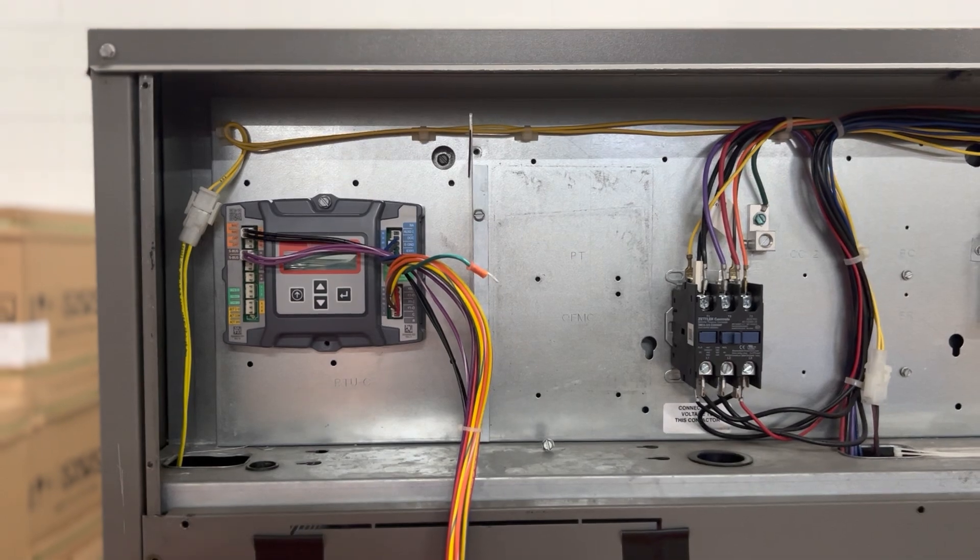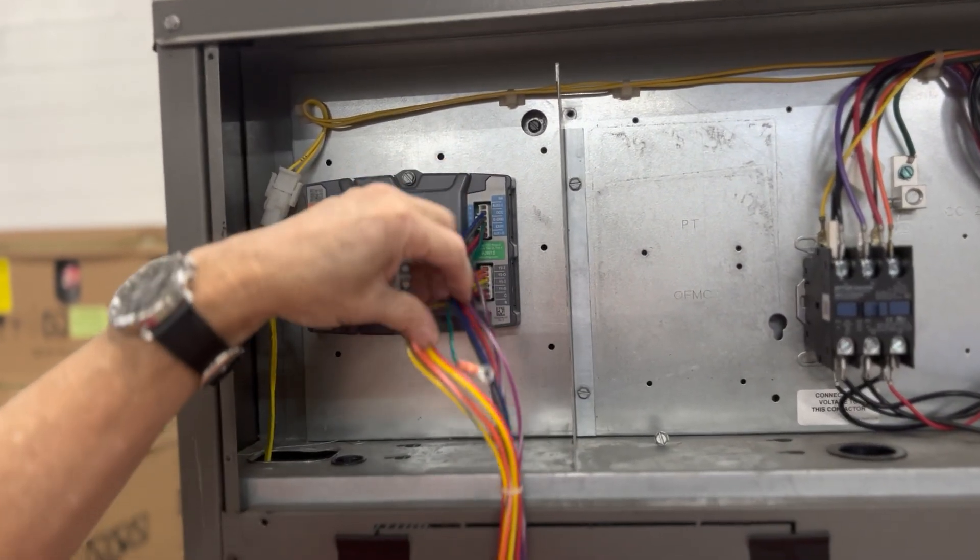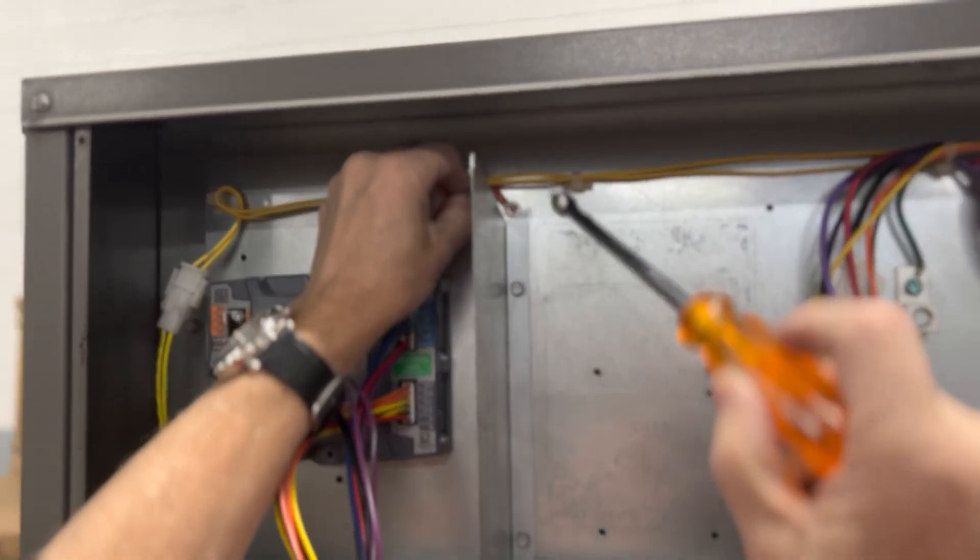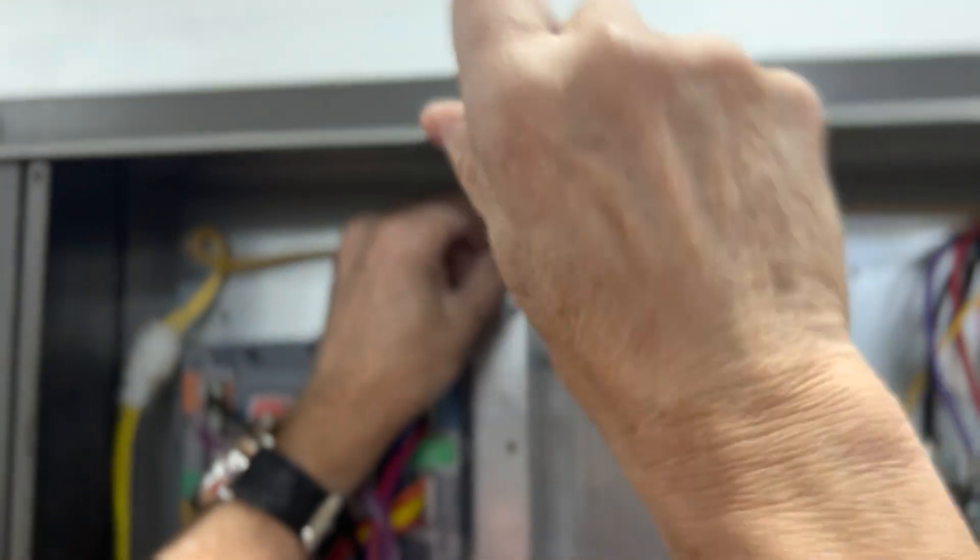Please notice also there is a ground wire right here with a loop stake on it. It needs to be connected right here like that.